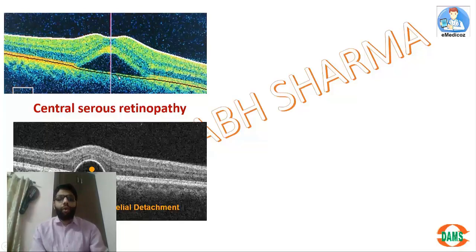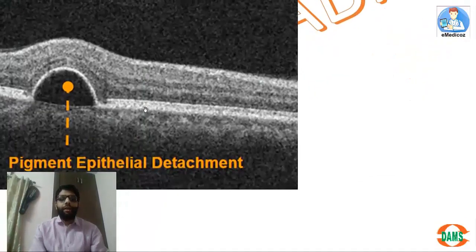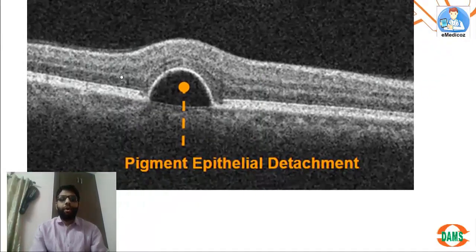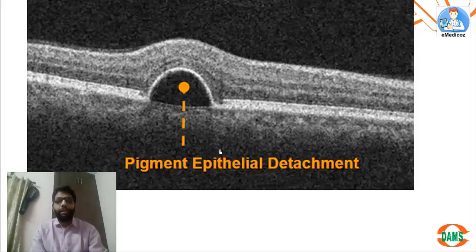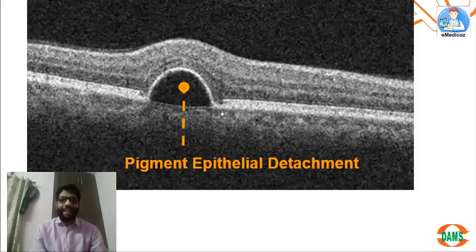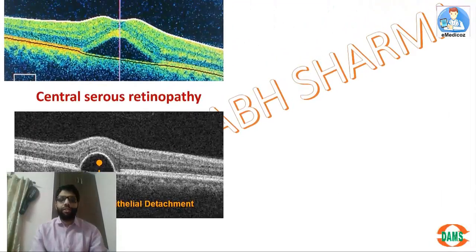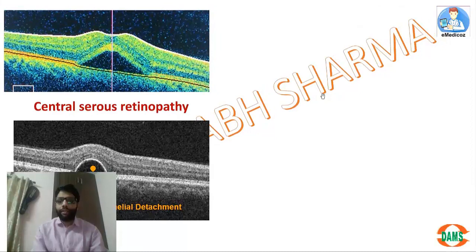If all 10 layers are separated from the choroid, that is the sub-RPE space, seen in pigment epithelium detachment. All 10 layers are detached from the choroid, as seen in age-related macular degeneration.